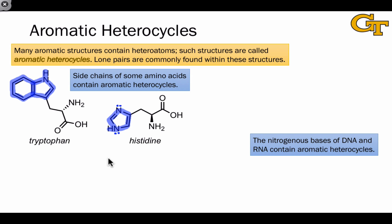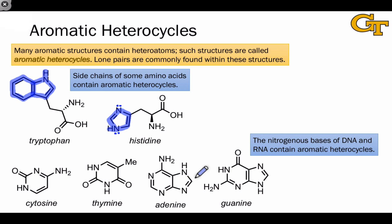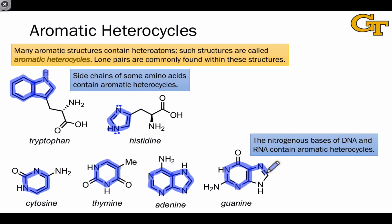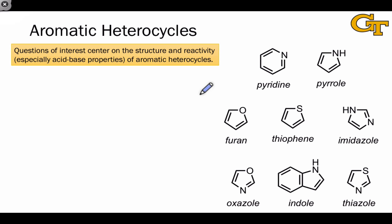Perhaps the most famous example of aromatic heterocycles in biochemistry are the nitrogenous bases of DNA and RNA. Here I've shown the four nitrogenous bases of DNA, and all of these contain aromatic heterocycles. Cytosine and thymine consist of six-membered cycles, while adenine and guanine are examples of fused aromatic heterocycles, consisting of a five-membered ring sharing a bond with a six-membered ring. The oxygens and nitrogens that decorate these structures as substituents are actually part of these pi systems as well. On the right-hand side of this slide, you can see a few more examples of important aromatic heterocycles that we'll come across in this lesson.